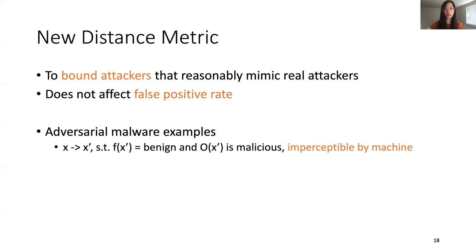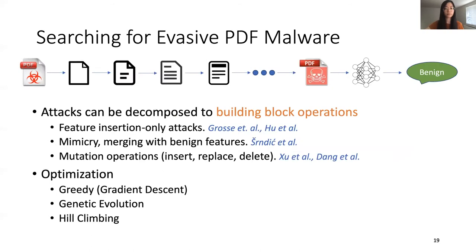Adversarial malware examples are not defined with a proper bound for robust training. The requirement is to perturb original malware X to get variant X', subject to two constraints: the classifier thinks X' is benign, and an oracle verifies X' preserves malicious functionality. To define the new distance metric, we studied how real attacks search for evasive PDF malware variants — starting from a malware, conducting building block operations including inserting features, merging benign features, and basic mutations, using gradient descent, genetic evolution, and hill climbing.